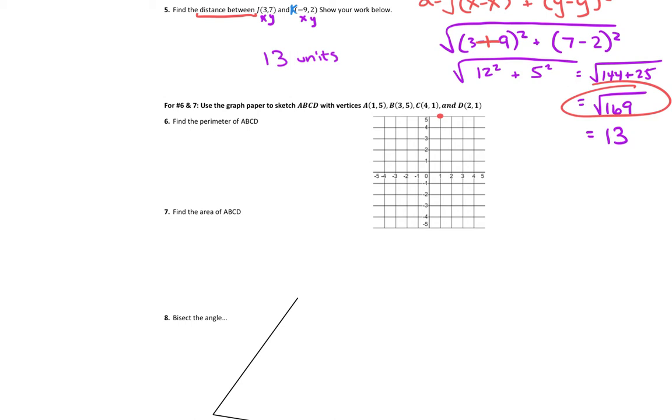So that's point A at one comma five. Remember, you do your X first. So B is going to be at three comma five, so three on the X axis and a five on the Y axis. And C is at four comma one. And D is at two comma one. Alright, let's see what kind of shape we got here.